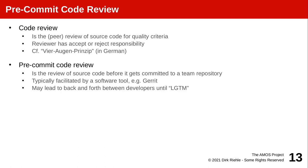The reviewer comments on it, maybe even suggests improvements, before possibly letting it through or giving the original author permission to commit it. To the extent that you can make it a requirement that somebody else signs off on it, tools can enforce this second-person sign-off. Tools like Gerrit or effectively on GitHub by way of pull requests, you can enforce a pre-commit code review.